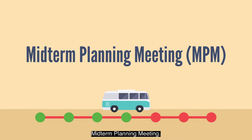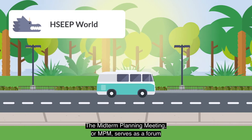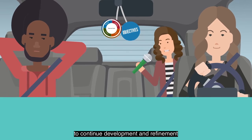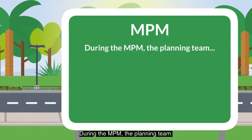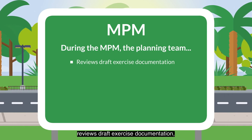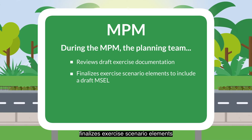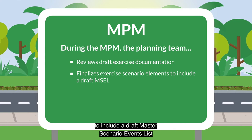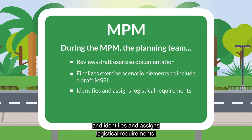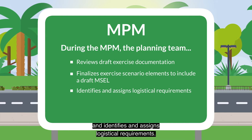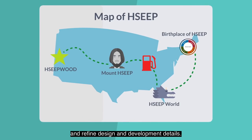The midterm planning meeting, or MPM, serves as a forum to continue development and refinement of the products and tasks started during the IPM. During the MPM, the planning team reviews draft exercise documentation, finalizes exercise scenario elements to include a draft master scenario events list if one is needed, and identifies and assigns logistical requirements. The MPM is the time to update and refine design and development details.